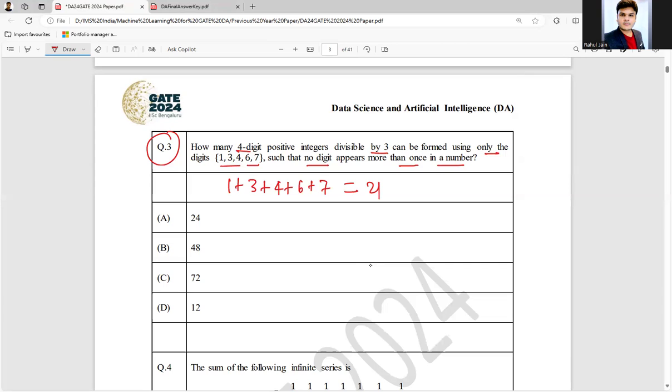So if it is divisible by 3 then I need to check after removal of which digit it is not divisible, right? So if I am going to remove 1, then the remaining would be 21 minus 1. It is 20 which is not divisible by 3, correct?